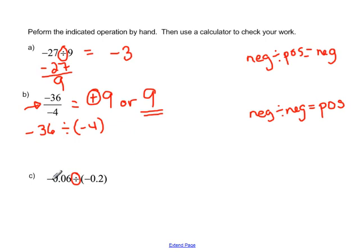Our last problem, we have a negative 0.06. So negative 6 hundredths divided by negative 2 tenths. Or negative 0.2, which is the same thing as negative 2 tenths. So we're being asked to do these by hand, so we want to be sure that we can get this set up. So remember how we set up a division problem like this?